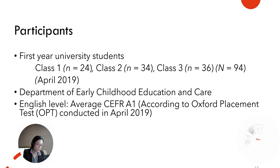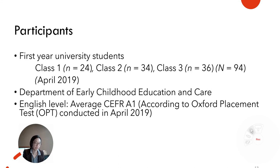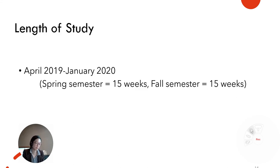Class 1 participated in informal cooperative learning, then formal cooperative learning. Class 2 did formal cooperative learning, then informal cooperative learning. And class 3 took part in informal and formal cooperative learning alternately throughout the year. The study compared and contrasted motivation and BPNs for classes 1, 2, and 3, investigating the differences and similarities of students who participated in various sequences of informal and formal cooperative learning. Length of study was from April 2019 to January 2020, or the 2019 academic year.